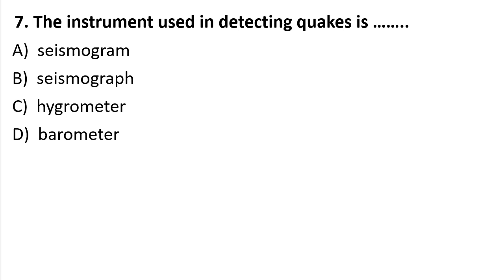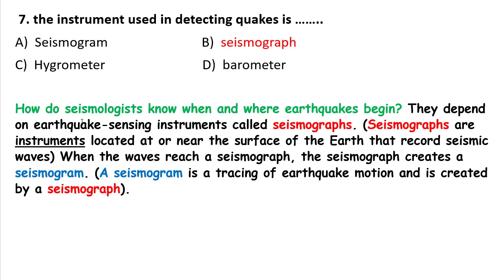Question 7: The instrument used to detect earthquakes is — A) Seismogram, B) Seismograph, C) Hydrometer, D) Barometer. They depend on an earthquake-sensing instrument called a seismograph. Seismographs are instruments located at or near the surface of the Earth that record seismic waves. So the answer is seismograph, not seismogram — they are different. A seismogram is the output created by a seismograph.